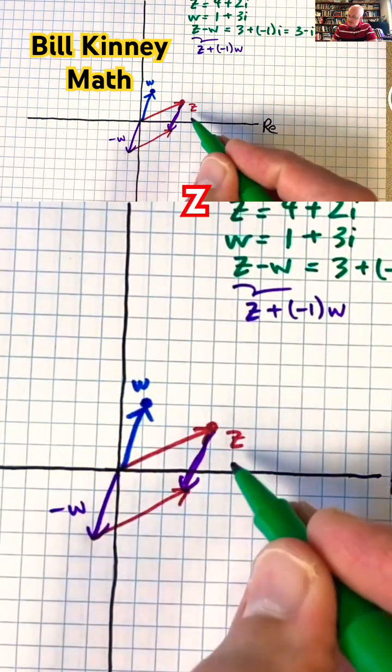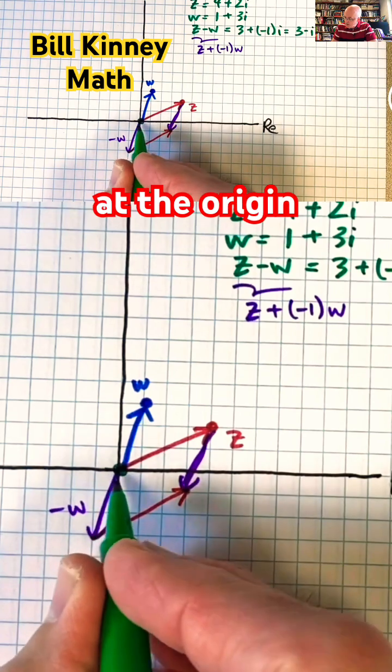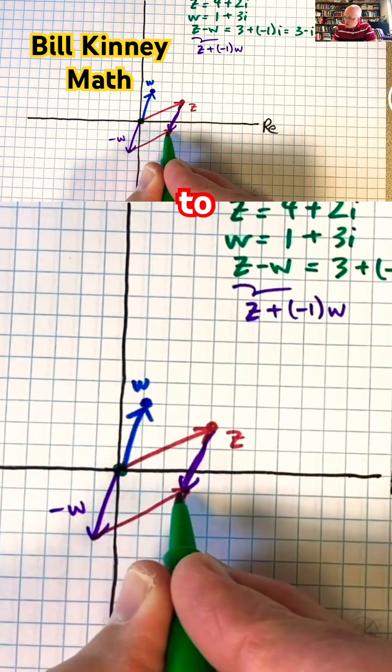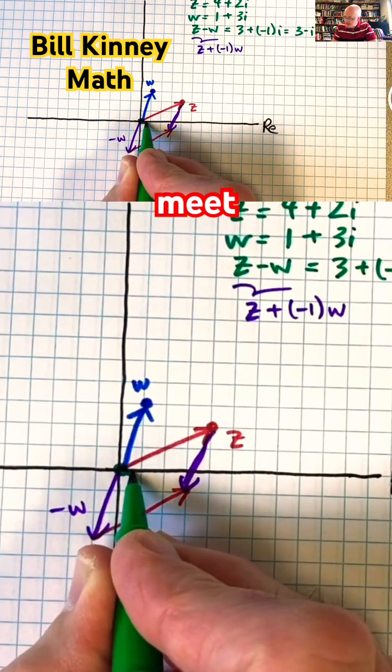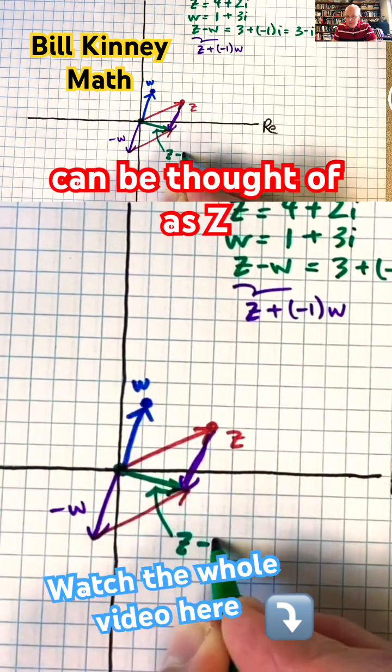that means the sum z plus negative w as a position vector starting at the origin will go from the origin to where these vectors here meet, right there. That green arrow can be thought of as z minus w.